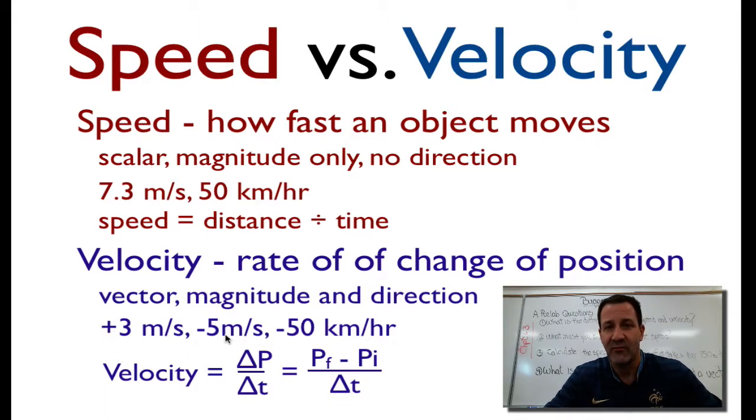Please remember that the sign of the velocity indicates the direction. Positive velocity does not necessarily mean the object is speeding up, and negative velocity does not necessarily mean it's slowing down. The only thing the sign tells you is the direction. We could use east, west, north, south, but in math and physics we typically use positive and negative.